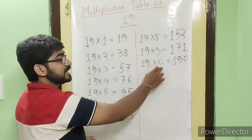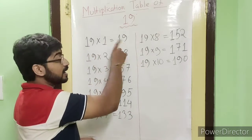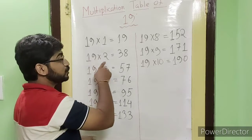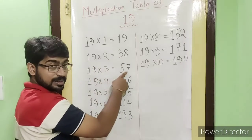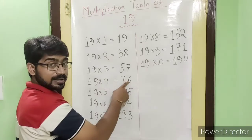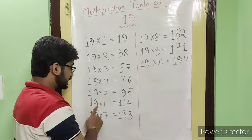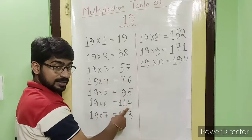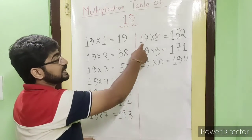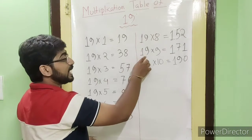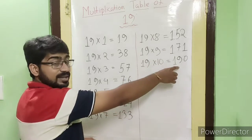19 ones are 19, 19 twos are 38, 19 threes are 57, 19 fours are 76, 19 fives are 95, 19 sixes are 114, 19 sevens are 133, 19 eights are 152, 19 nines are 171, 19 tens are 190.